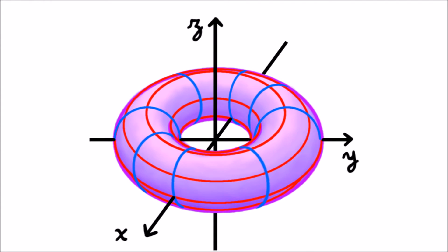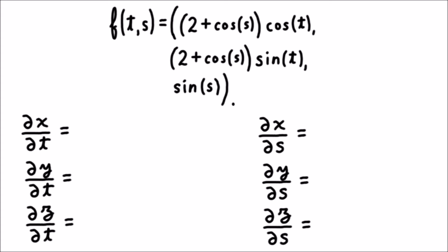Now let's look at the derivative of this function. First, we treat s as constant and t as a variable to find the derivative with respect to t. We get that ∂x/∂t is -(2 + cos s) × sin t, ∂y/∂t is (2 + cos s) × cos t, and ∂z/∂t is 0.